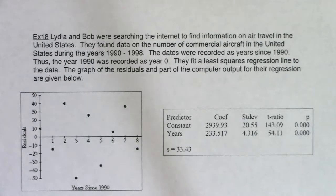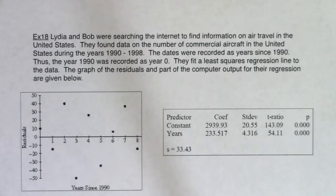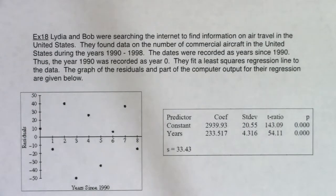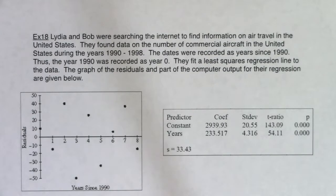Here's a free response question. Lydia and Bob were searching the internet to find information on air travel in the United States. They found data on the number of commercial aircraft in the United States during the years 1990 to 1998. The dates were recorded as years since 1990, so the year 1990 was recorded as year zero. They fit a least squares regression line to the data, and the graph of the residuals and part of the computer output for the regression are given below.